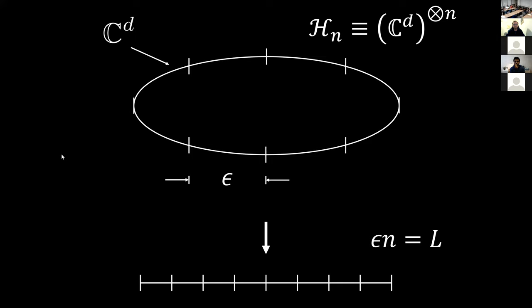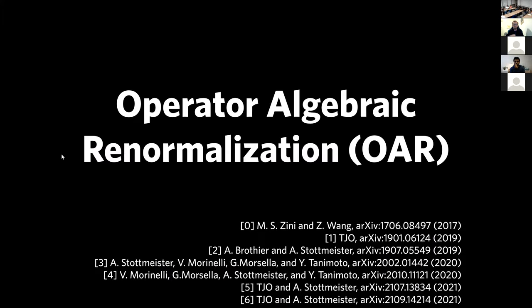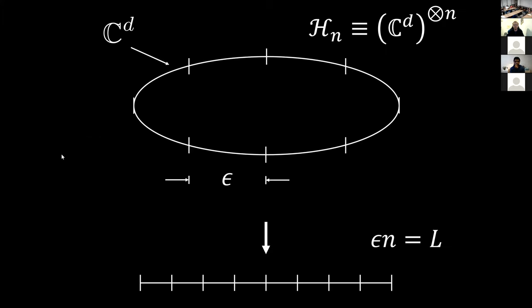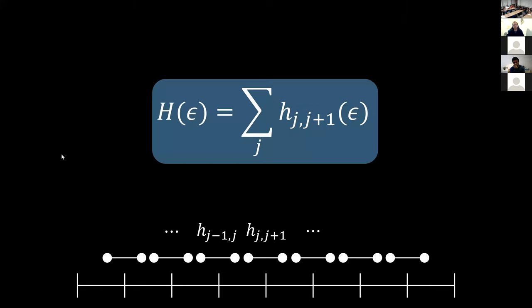A further audience question: d is finite, so don't you need to take d to infinity? The speaker responds: yes, you could certainly associate to each lattice cell an infinite-dimensional Hilbert space — there's no fundamental reason not to. In fact, some of the referenced papers do exactly that. The finite-d assumption is only to simplify the presentation and have something finite-dimensional on the table.